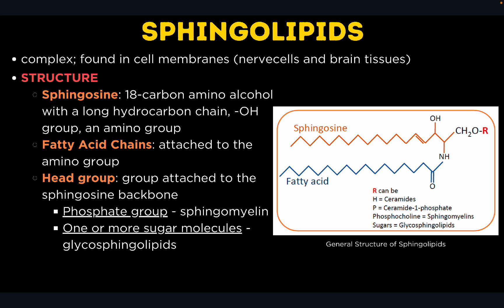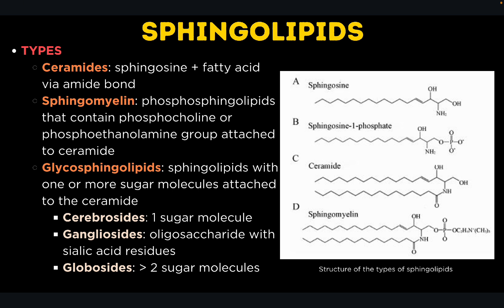Sphingomyelin is formed when a phosphate group is linked to one of the alcohol groups via a phosphate ester bond and is further connected to choline. A glycosphingolipid is formed if one or more sugar molecules are present. The types of sphingolipids include ceramide, the simplest type composed of sphingosine plus fatty acid, which is the core and precursor to other molecules. Next is sphingomyelin, which contains a phosphocholine or phosphoethanolamine group attached to ceramide. Glycosphingolipids are sphingolipids with one or more sugar molecules attached to ceramide.